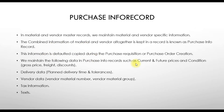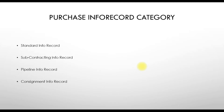We maintain the following data in purchase info records: current and future prices, conditions like gross price, rate, and discount, the planned delivery time, current vendor data, and text information such as purchase info text and purchase order text.